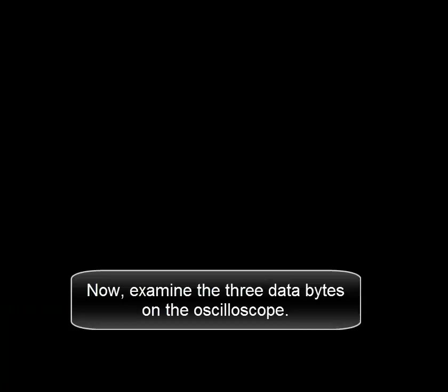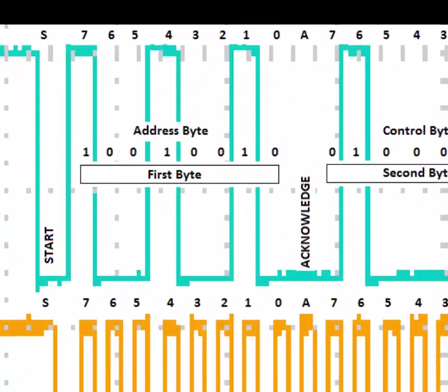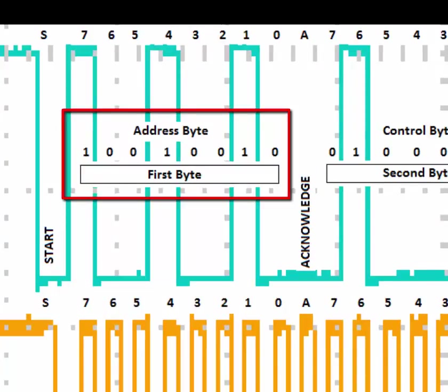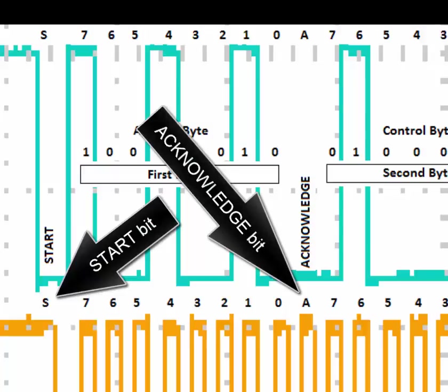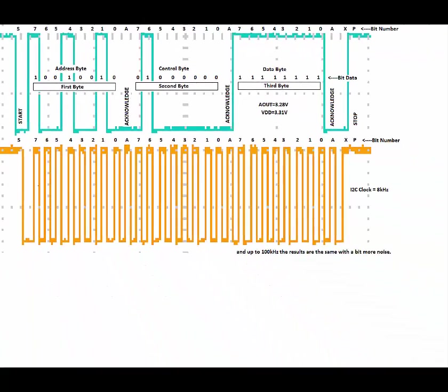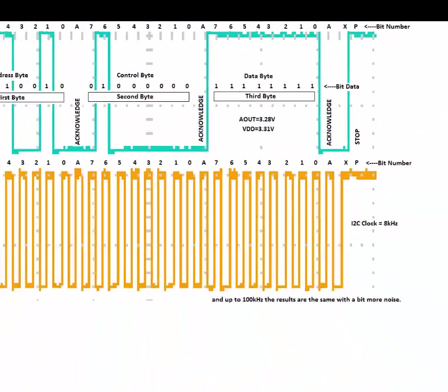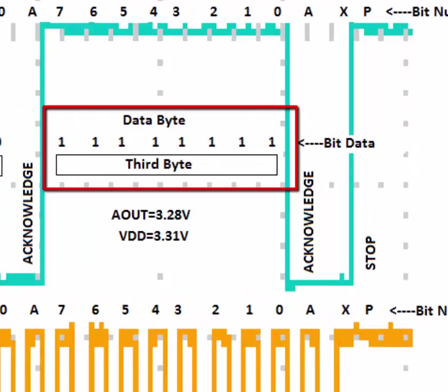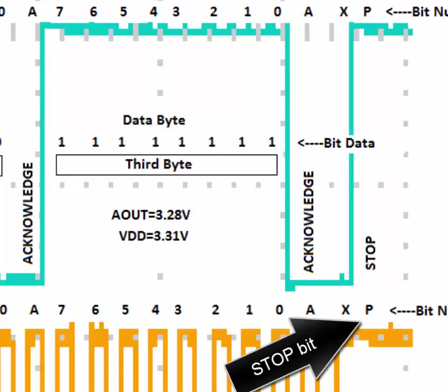Examining the three data bytes on the oscilloscope: the address byte is the first byte — 1001001 followed by a start bit and an acknowledge bit. The control byte is the second byte: 01 followed by zeros. The data byte is the third byte, in this case containing all ones, followed by a final acknowledge bit and stop bit.